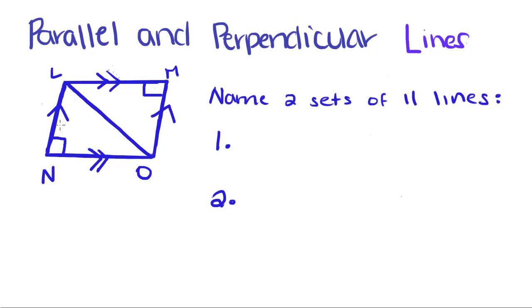If we start with segment LN, we know that LN is parallel to MO, because they both have these little lines on them.